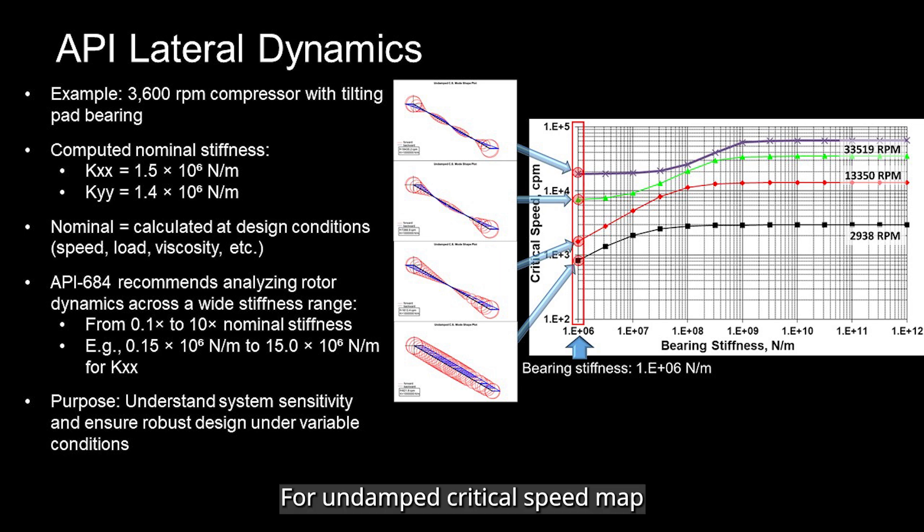For undamped critical speed map, API 684 suggests sweeping the stiffness across a wide range. For example, 0.1 times the nominal stiffness up to 10 times the nominal stiffness. So even though stiffness isn't fixed in real life, the nominal value gives you an anchor to explore variability and system dynamics.